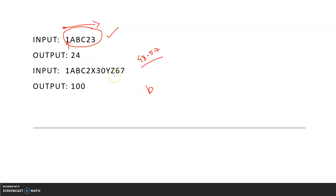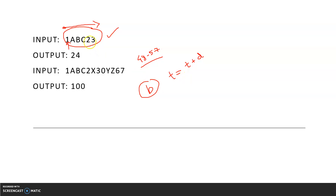If a particular extracted character does not satisfy this condition — that is, it doesn't lie between ASCII 48 and 57 — we convert whatever is stored in 'b' into an integer and add it: t = t + b. At the end of execution from start to end of the string, 't' will hold the sum of all integers found. You might wonder how '2' and '3' together form 23 — it works the same way.